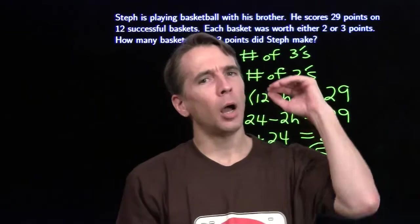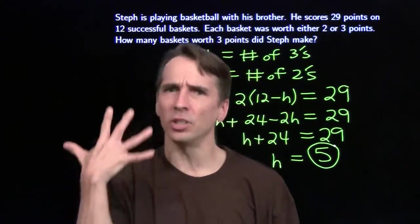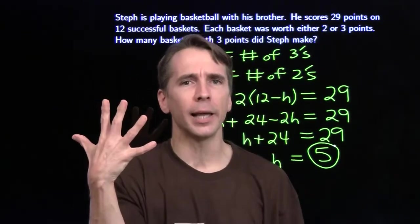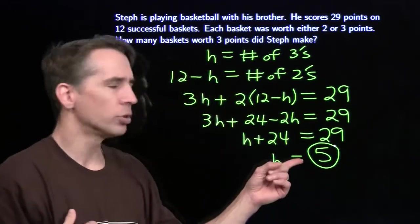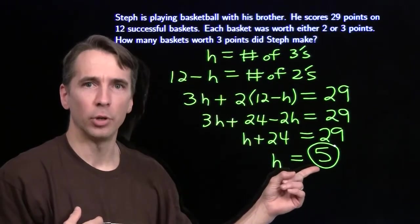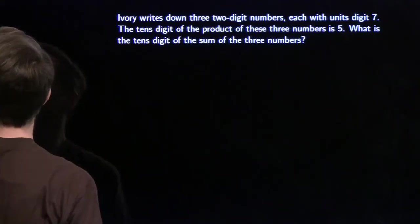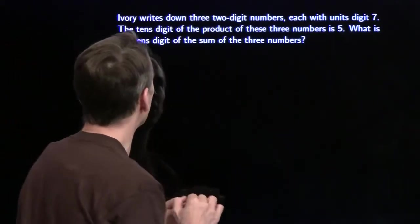So to get from 24 up to 29, he has to do this five times. Give up that layup, step back, and shoot the three pointer. That's five three pointers. All right, let's move on to the next problem. I hope we can find a slick solution to this one.